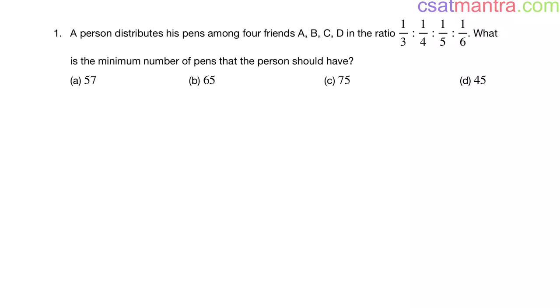A person distributes his pens among four friends A, B, C, D in the ratio 1/3:1/4:1/5:1/6. What is the minimum number of pens that the person should have? This question is an intermix of ratios, proportion, and LCM concept. You can expect similar questions in CSAT.